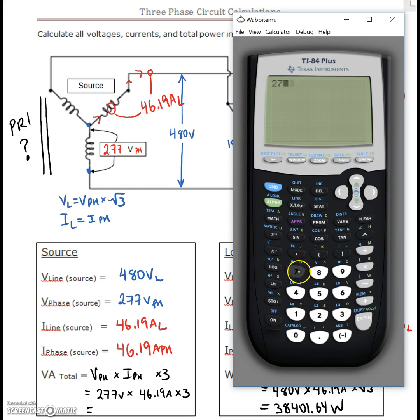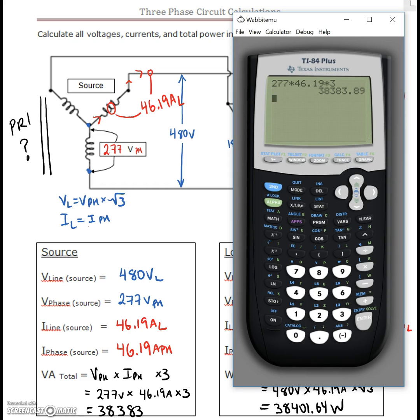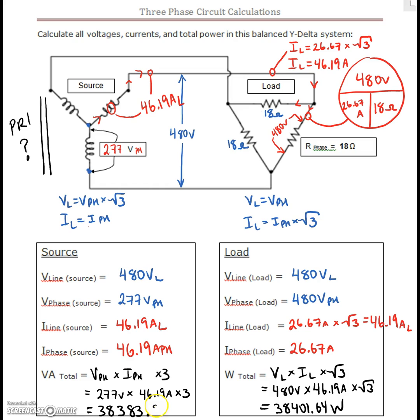We got 277 times our 46.19 times the square root of 3, and that gives us 22,000. What did I do? Again, I did the same thing. Good gracious. 277 times 46.19 times 3 gives us 38,383.89. That's better.